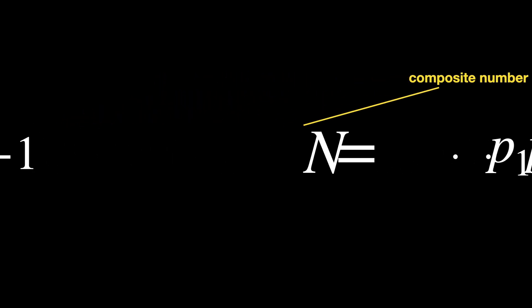For example, say we start with a list of 2 times 3 times 5 plus 1. n is therefore 31. 31 is a new prime number, which is not already on the list and must therefore be added to it.